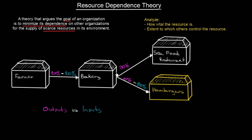We are only getting bread from this particular bakery. For the seafood restaurant, they have many more suppliers, so that 90% represents only about 20% of their input because they are a very big restaurant. So only a minor part of the bakery's output represents the entire part of our input. That means we are very dependent on this bakery, but the bakery is not dependent on us. If we are no longer a customer, they only lose 10% of their output. But if the bakery stops supplying us, we lose 100% of our input.